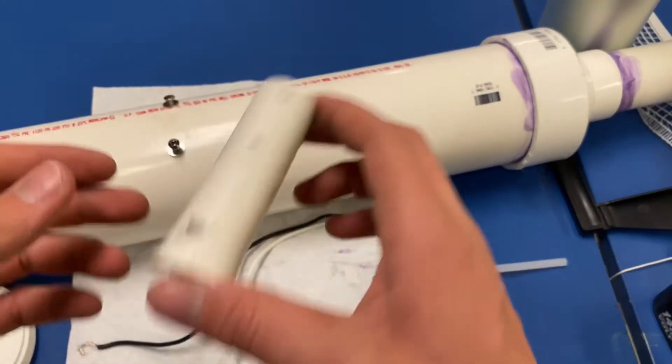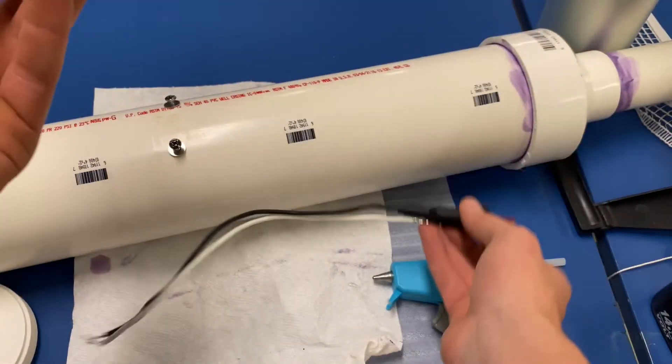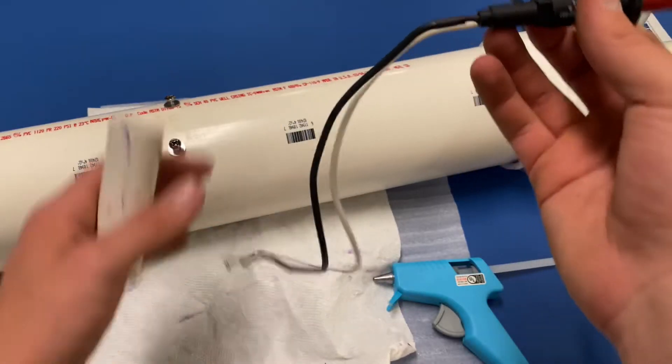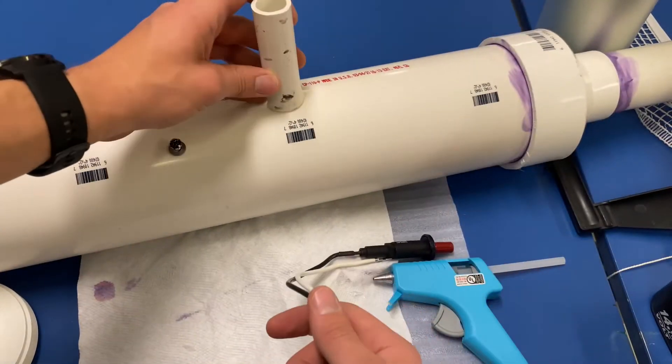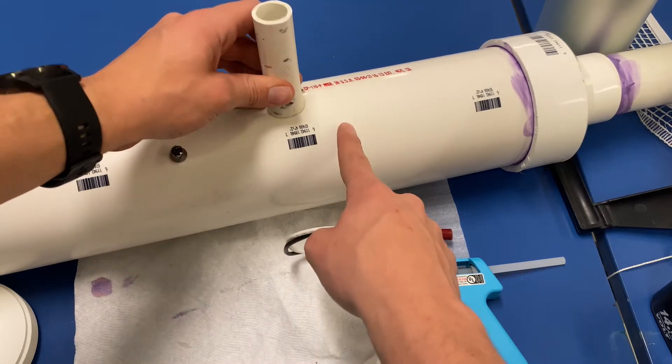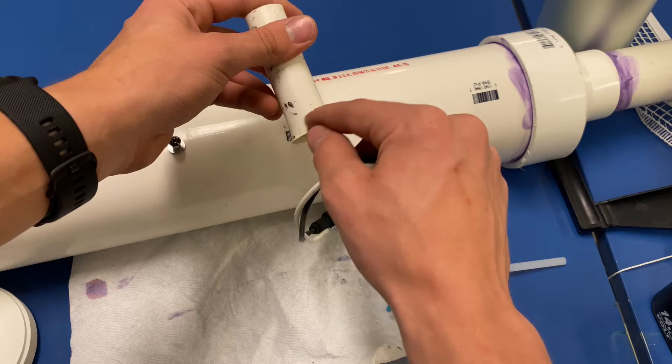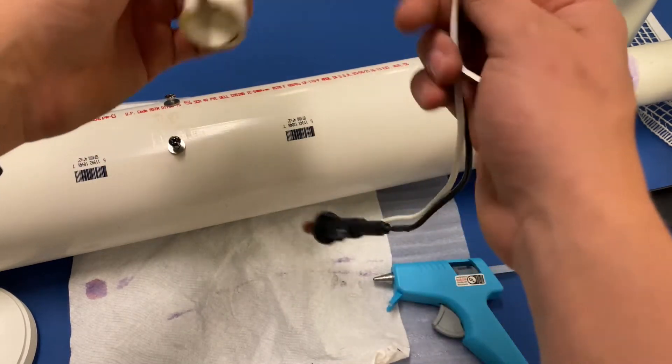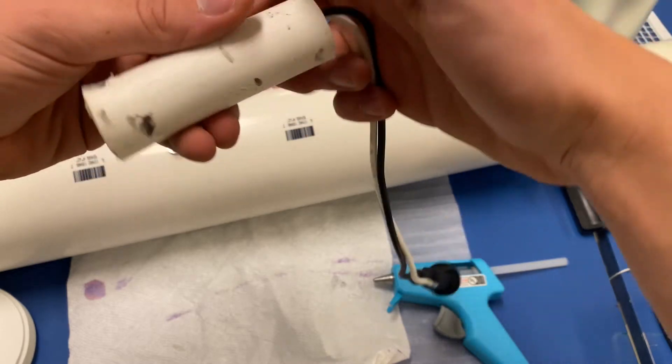And then to make the handle for the igniter to sit into, find a PVC pipe that fits your igniter. Go ahead and melt the bottom of it and then press it onto your four inch pipe so that it makes a nice rounded edge. And then notch out a little bit of the bottom so that the wires can be fed through there.